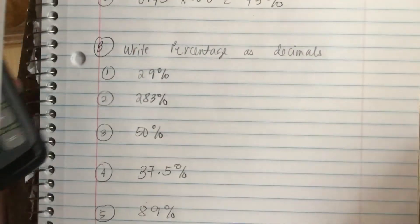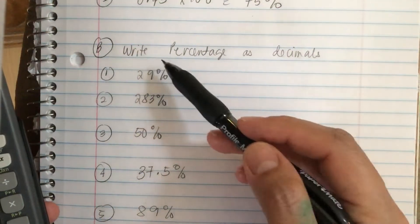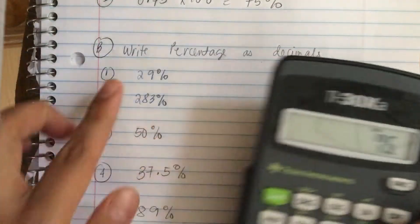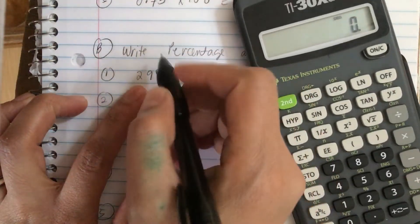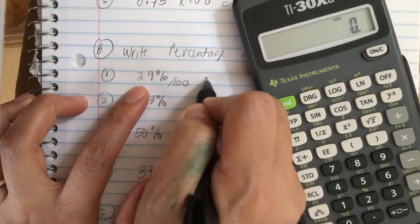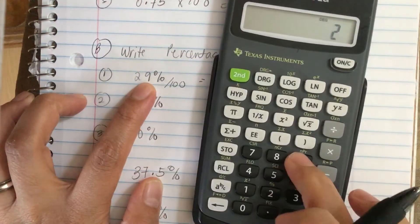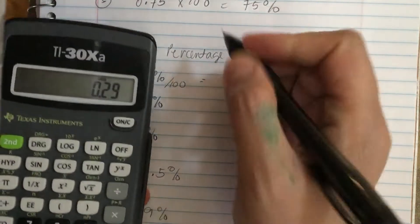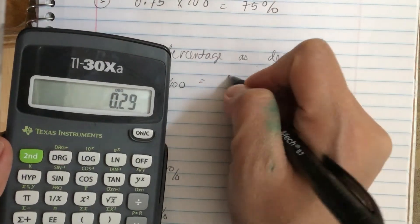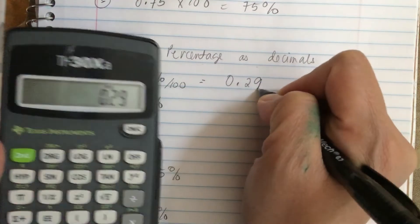Now we go backwards. We write percentage as decimal. So they give us the percent, so we divide by 100. So we have 29 divided by 100 will give us the decimal equivalent. So we have 0.29.